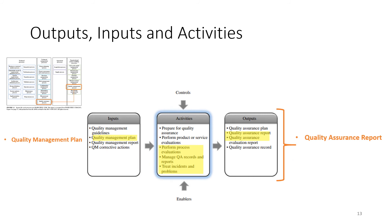The quality assurance process is a simple process. The input is the quality management plan. Then auditing and inspection of the quality of the process takes place, and the result is a quality assurance report. So the input is the quality management plan and the output is the quality assurance report.